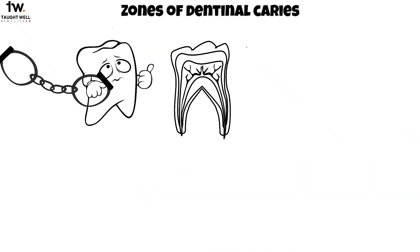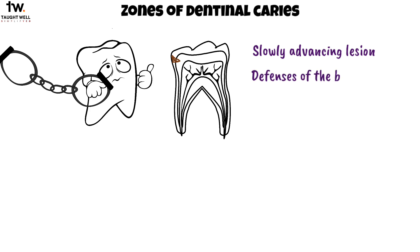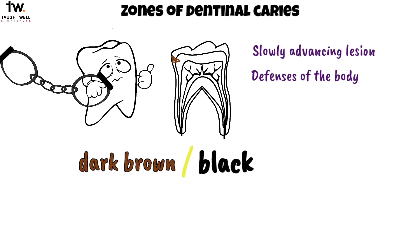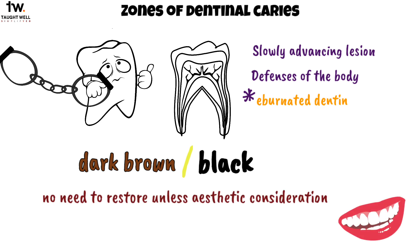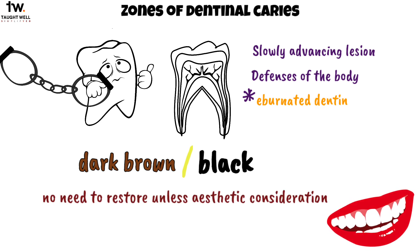It is possible to arrest caries. This happens when the lesion does not rapidly advance and the body's defenses stop further spread — these are remineralized lesions that normally appear dark brown or black in color. The dentin in an arrested caries lesion is called ebonated dentin, and there is no need to restore these lesions unless there is an aesthetic consideration.